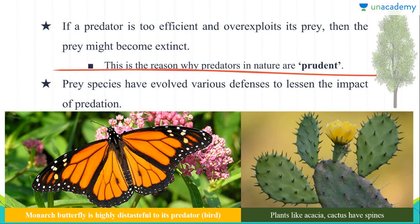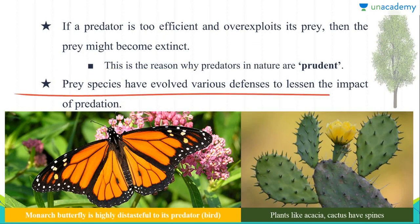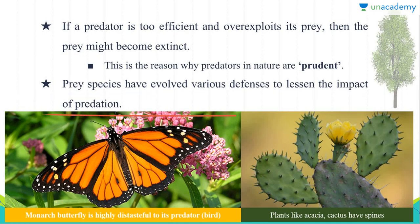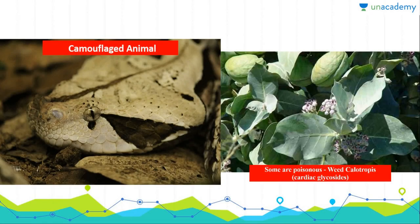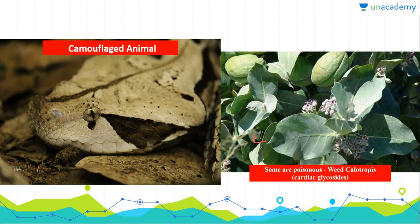To avoid this situation, predators in nature become prudent. Prey species have evolved various defense systems to lessen the impact of predation. For example, plants like acacia and cactus have spines. The monarch butterfly is very distasteful to its predators like birds. Some animals use camouflage and are very hard to identify. Some poisonous weeds like Calotropis generate cardiac glycosides, which are very toxic, protecting them from grazing.